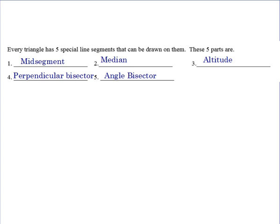Every triangle, no matter what type, has five special lines that we can draw on them. Those five lines are called mid-segments, medians, altitudes, perpendicular bisectors, and angle bisectors.